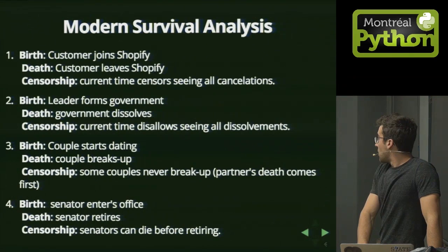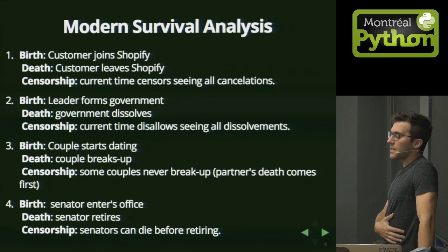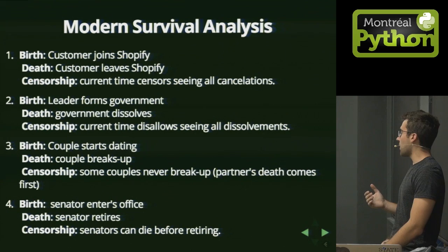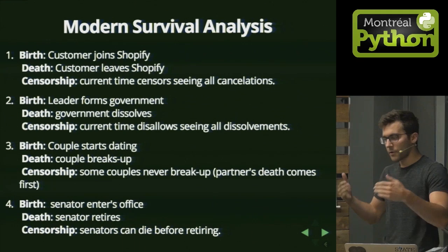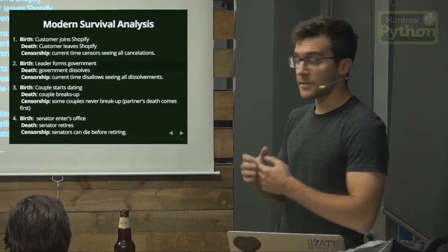Modern day survival analysis is a lot cooler than its actuarial history. We use it at Shopify: a customer joins Shopify — that's their birth event. The death event is when the customer leaves. Censorship occurs when today's date censors an individual from their death. All of our current 120,000 shops — I haven't seen them die, but I still want to make inference on that population. Another example: when a leader forms a government, that's the birth event; the death event is when that government dissolves.